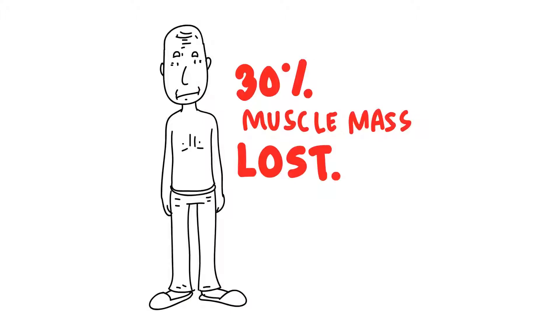Did you know that from ages 40 to 50, you can lose 20% of your bone density and an additional 10% each decade after that?